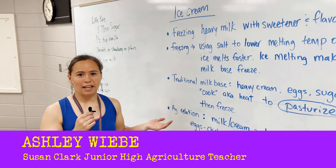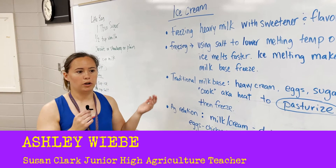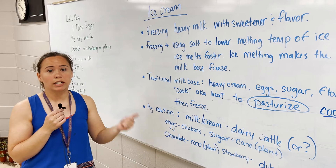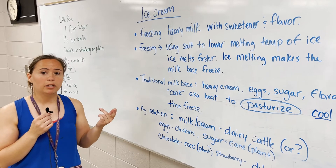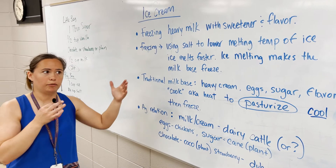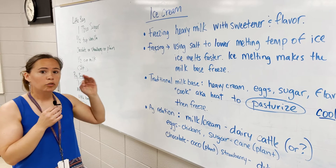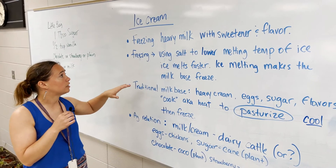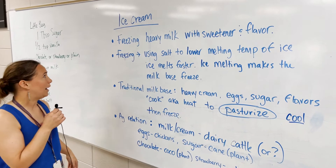So we're making ice cream today in the ag room. We do this for a couple reasons. One, obviously ice cream is made from a lot of ag products. In the seventh grade curriculum, we go through a unit on dairy products, so the kids have understood kind of from step to step how we get this. So as we're making ice cream today, we go through kind of the process, and you can hear they're very excited in the background here.